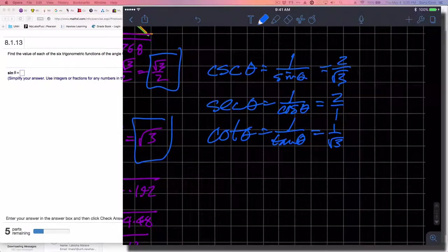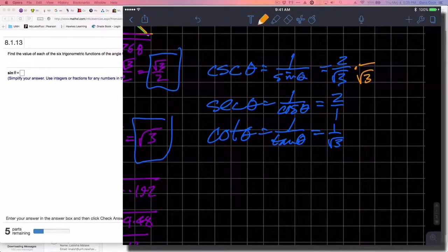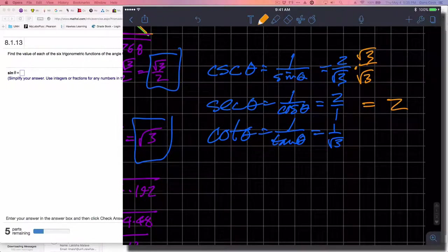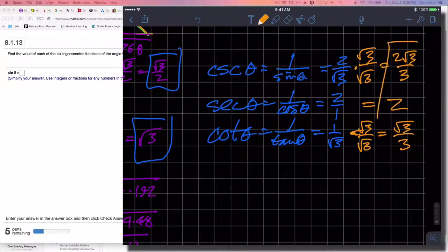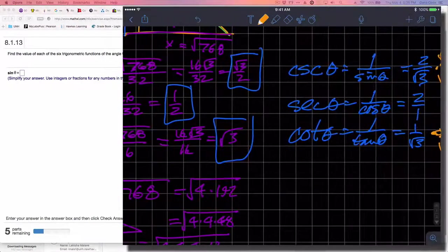I need to rationalize these, so I'm going to multiply this times radical 3 over radical 3. I'm going to leave this one alone, so that's just 2. This one I have to multiply times radical 3 over radical 3 as well. So this becomes radical 3 over 3, and this one is 2 radical 3 over 3. There are my six answers.